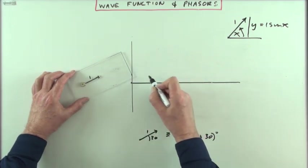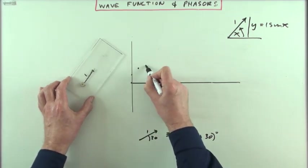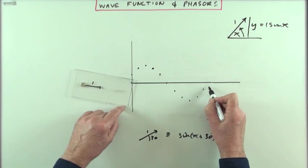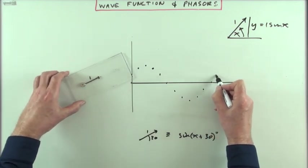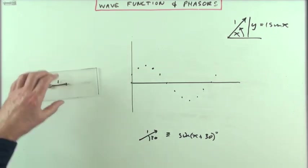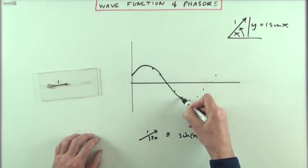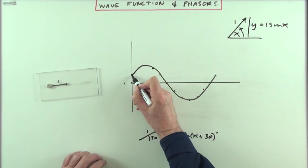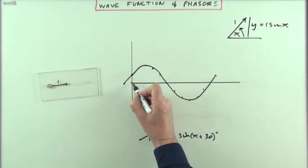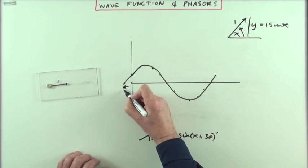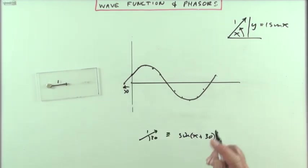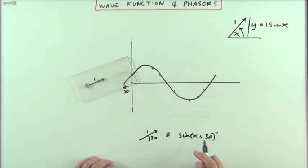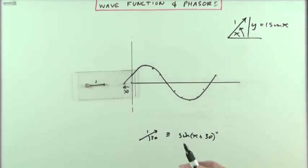As you plot that phasor turning through consecutive 30-degree steps, it will once more plot out a sine curve — only this time the sine curve has been shifted. It has a phase to it; it has been shifted back 30 degrees, whereas the equation is x + 30. That follows straight away from the phase diagram: start at 30 degrees and it will trace this curve.